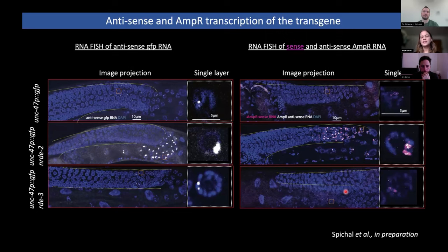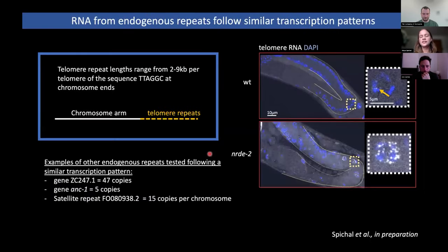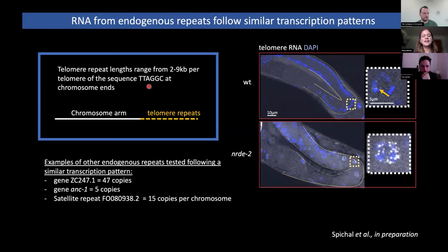We were then wondering if this was something that also happened in endogenous repeats. So we looked at different endogenous sequences present in the C. elegans genome, one of them being telomere repeats. As you probably know, telomere repeats cover the ends of chromosome arms to protect them. In C. elegans, they are usually 2 to 9 kilobases in length.